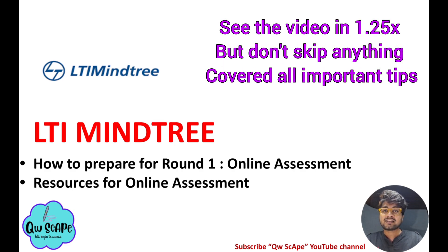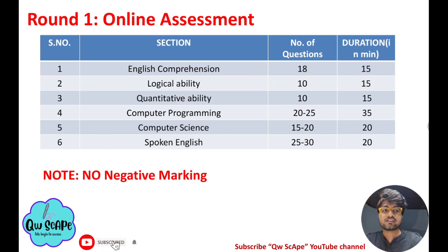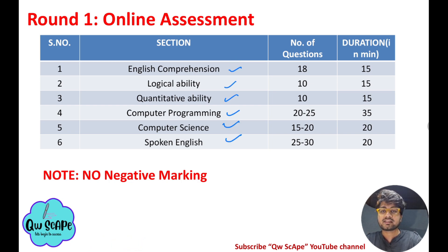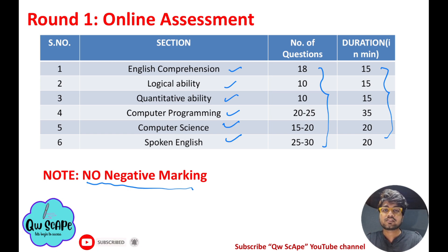Watch this video till the end — you can watch at 1.5x speed to finish sooner and start your preparation. As you know, the assessment pattern has six sections: English comprehension, logical ability, quantitative ability, computer programming, computer science, and spoken English. Each section has a specific number of questions and minutes allotted. There is no negative marking, so don't leave any questions blank — fill in any option randomly if needed, as it might be correct.